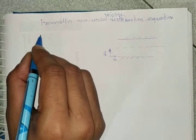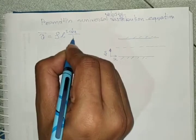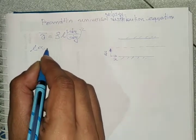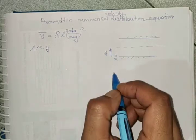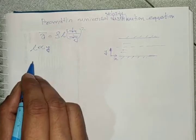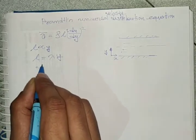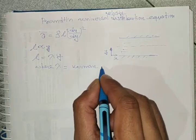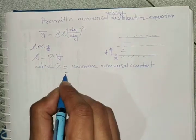For the Prandtl universal velocity distribution equation, from Prandtl mixing length theory we have τ = ρL²(du/dy)². Here, the mixing length L depends on y — considering a pipe with x direction along the axis and y perpendicular — so L = λy, where λ is called the Karman universal constant, with value 0.4.